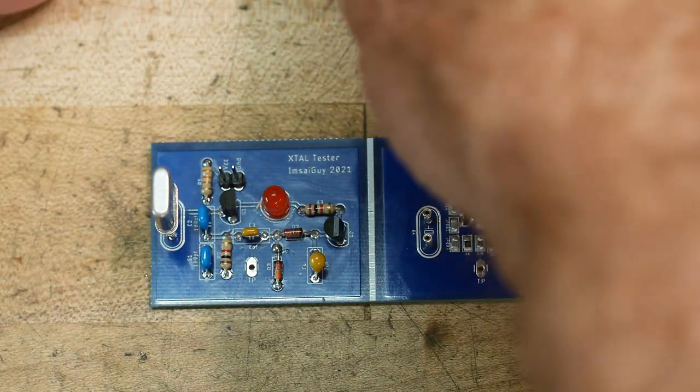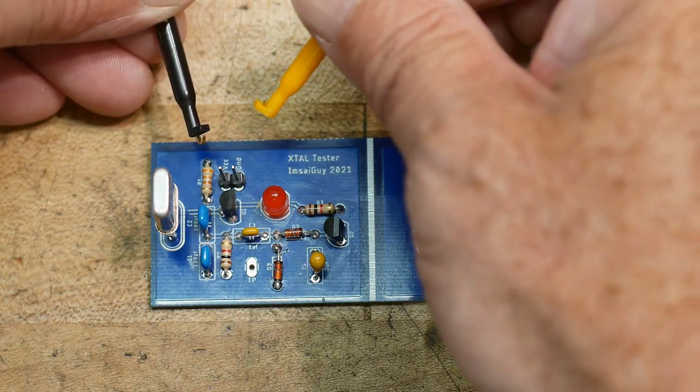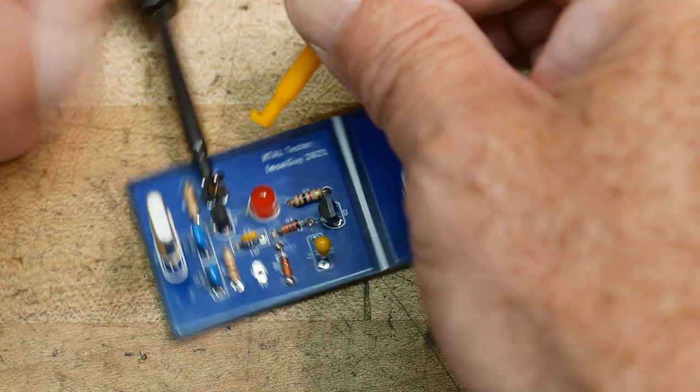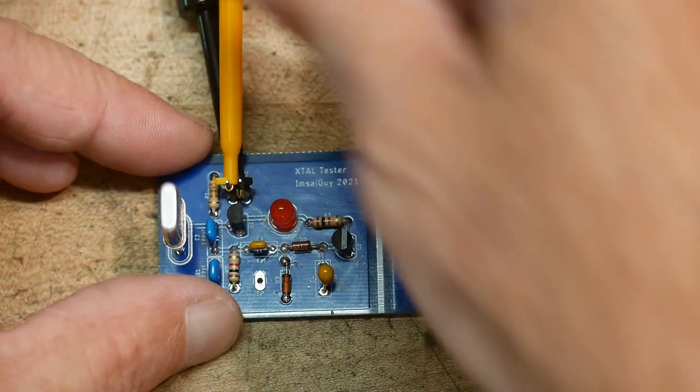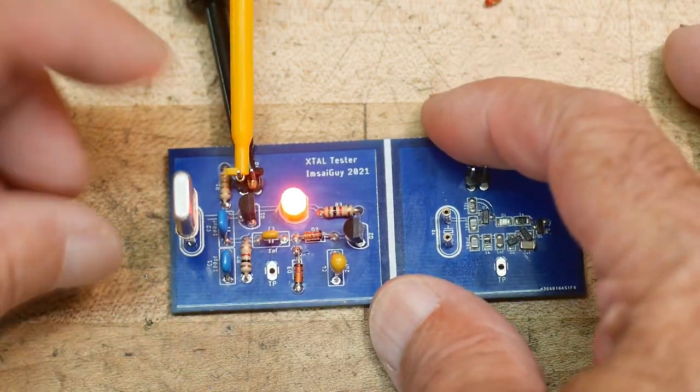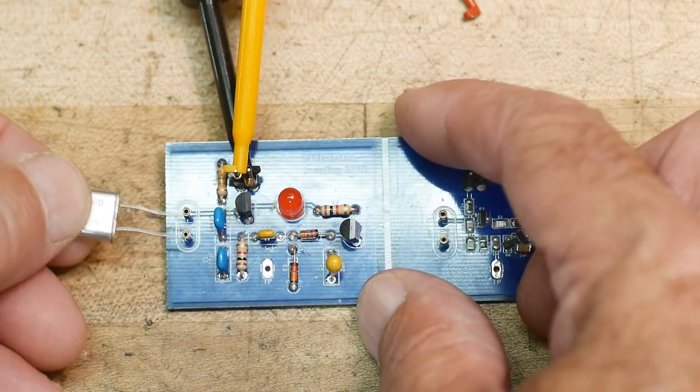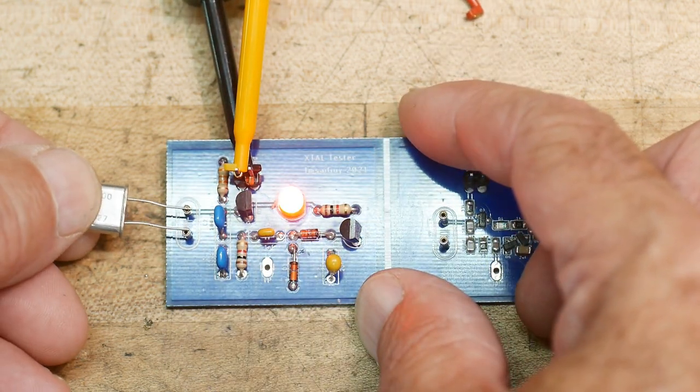Let's turn it on and show it to you in action. This thing can use pretty much any voltage between about 5 and 15 volts. There's a ground connection and a plus connection. We can turn it on and there we go, we have a light. We pull out the crystal and the light goes out. So obviously this crystal is good.